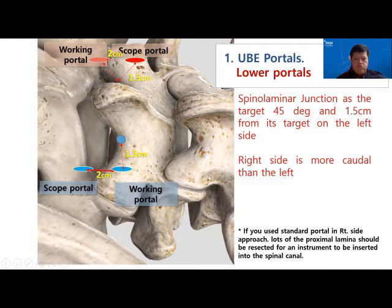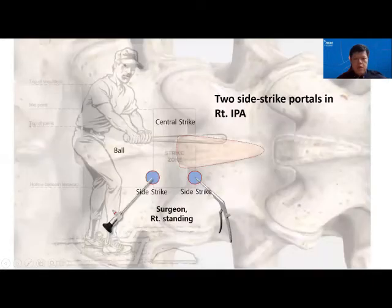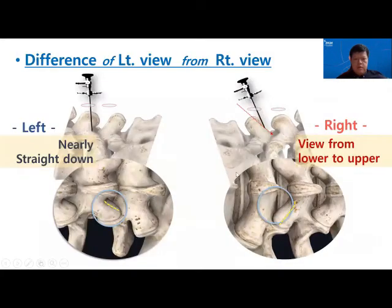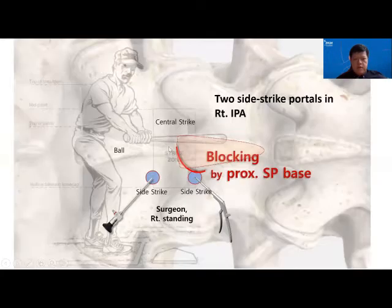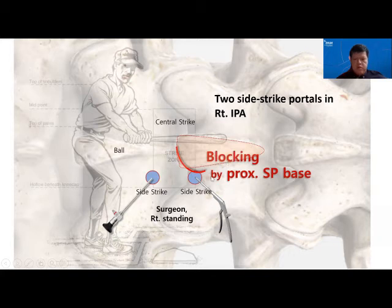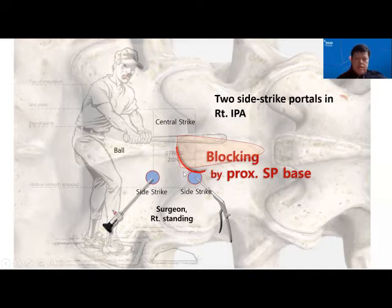The UBE portal is mainly based on the spinal laminar junction, measuring about 5 cm. We tend to shift a little lower on the right side so that as we get the working instrument in, it won't be blocked by the proximal laminar base. We tend to position the instrument ports slightly lower than the interlaminar space.